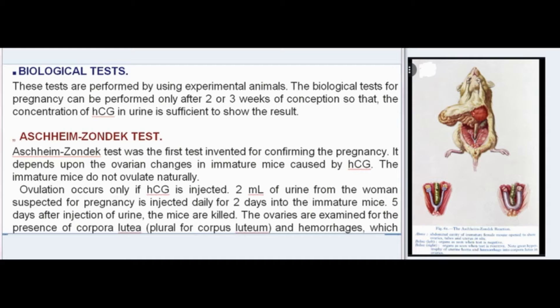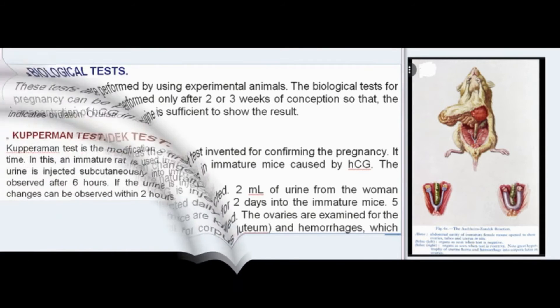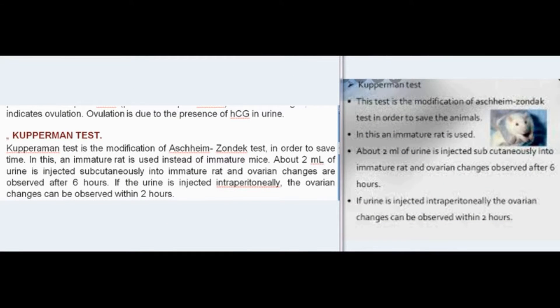The Aschheim-Zondek test was the first test invented for confirming pregnancy. It depends upon ovarian changes in immature mice caused by HCG. Immature mice do not ovulate naturally; ovulation occurs only if HCG is injected. Two ml of urine from the woman suspected of pregnancy is injected daily for two days into immature mice. Five days after injection, the mice are killed and the ovaries are examined for the presence of corpora lutea and hemorrhages, which indicates ovulation due to the presence of HCG in urine.